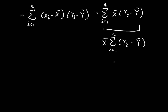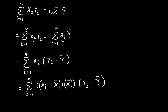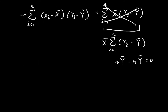If you sum all the y terms, that equals n times the sample mean of y. And summing the sample mean of y n times is also n times the sample mean of y. So this whole term equals zero, and the numerator can therefore be expressed in this nice-looking form.